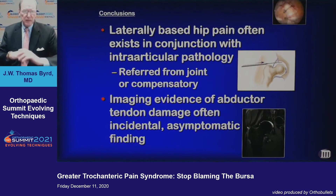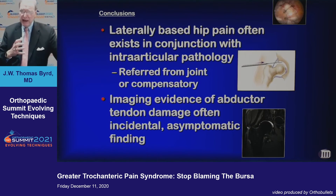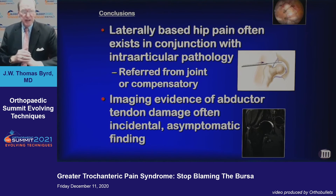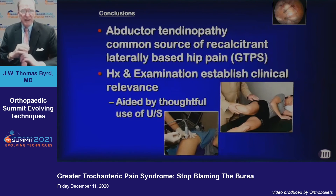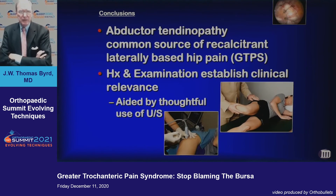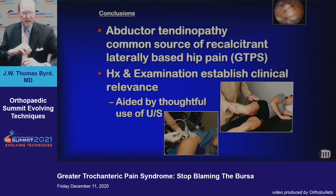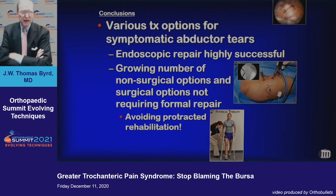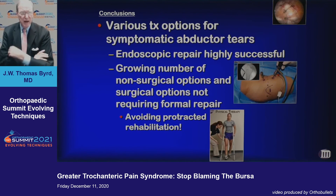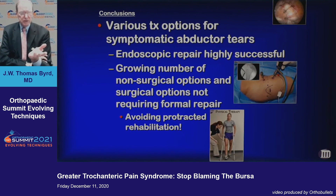In conclusion: laterally-based hip pain oftentimes exists in conjunction with intraarticular pathology — it may simply be pain referred from the hip joint, or there may be compensatory laterally-based problems. The imaging evidence of abductor tendon damage is oftentimes an asymptomatic finding. Abductor tendinopathy is a common source of recalcitrant laterally-based hip pain, which led to the Greater Trochanteric Pain Syndrome diagnosis. Your history and exam are important for establishing clinical relevance, aided by ultrasound. There are various options for symptomatic abductor tears, and endoscopic repair has a high success rate, with a growing number of non-surgical and surgical options that don't require formal repair, especially for partial-thickness tears.